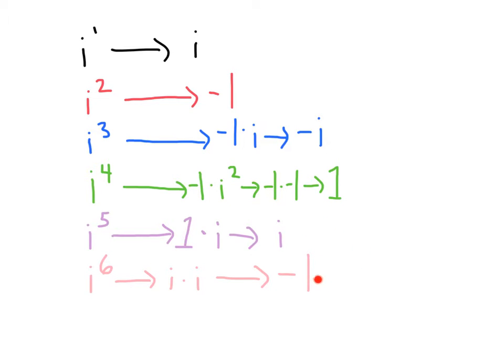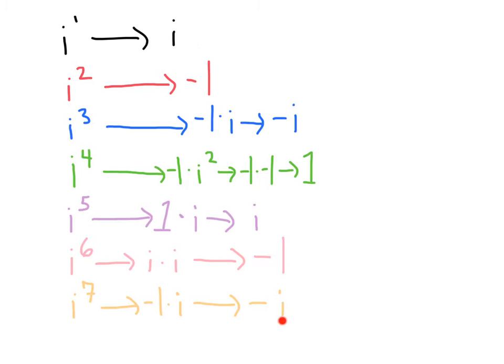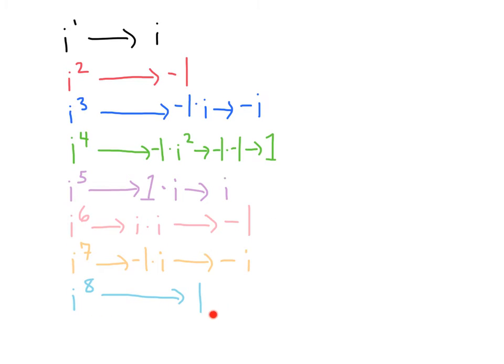If we can see that if we go to i to the 7th, we're going to end up back at negative i. And you can see as many i's as you can multiply, you're going to keep going through this cycle: i, negative 1, negative i, 1, i, negative 1, negative i, then i to the 8th is back to 1.